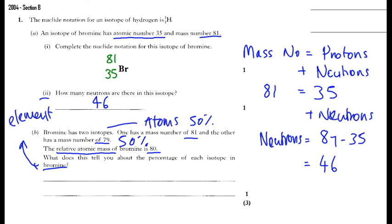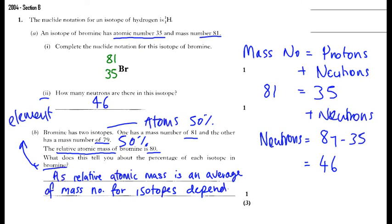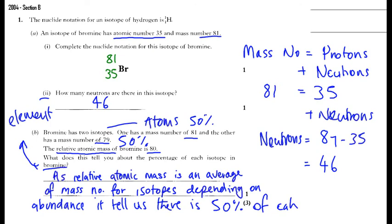As relative atomic mass is an average of mass numbers of isotopes, depending on abundance, it tells us that it is fifty percent of each isotope.